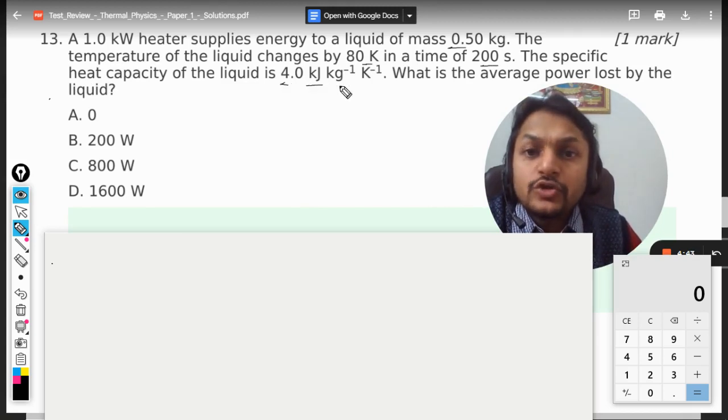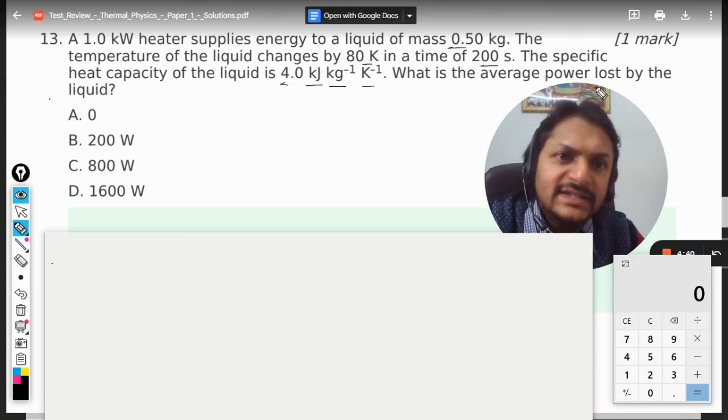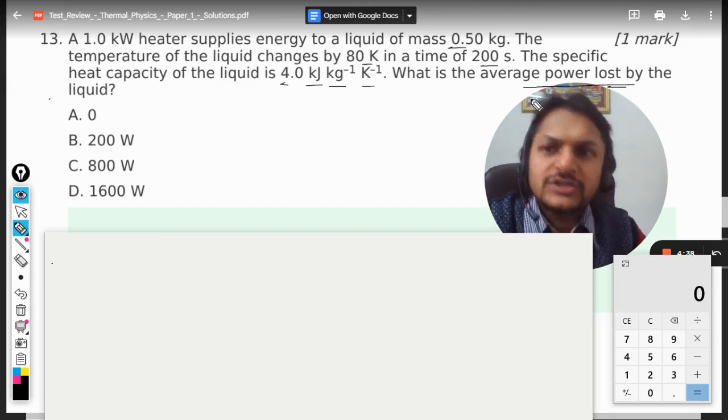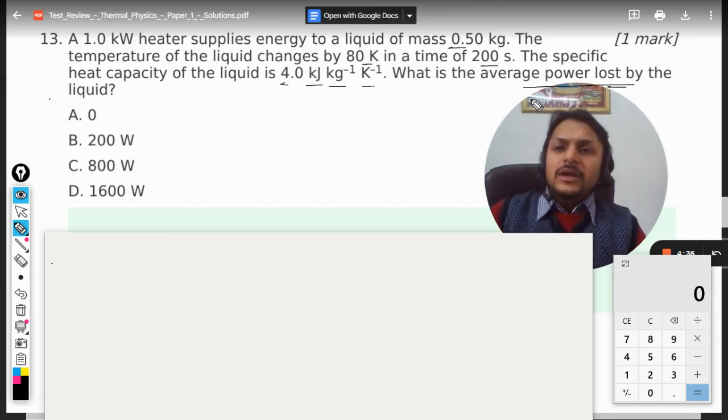The specific heat capacity of the liquid is 4 kilojoule per kg kelvin. What is the average power lost by the liquid?